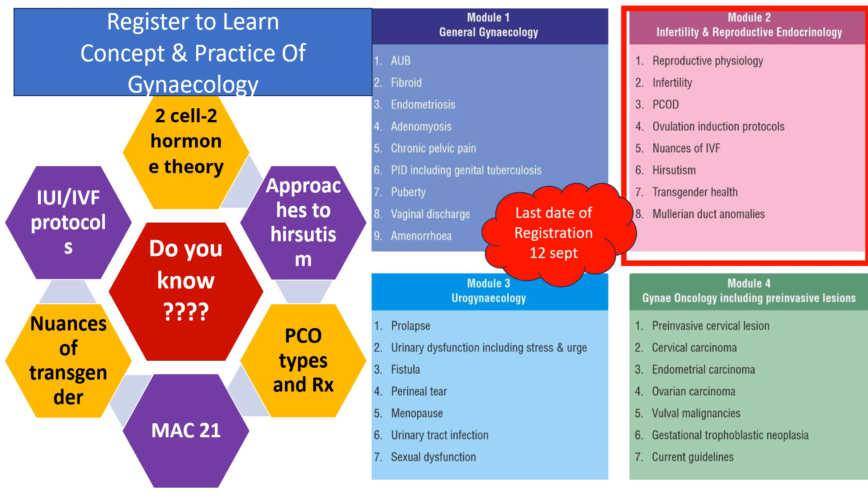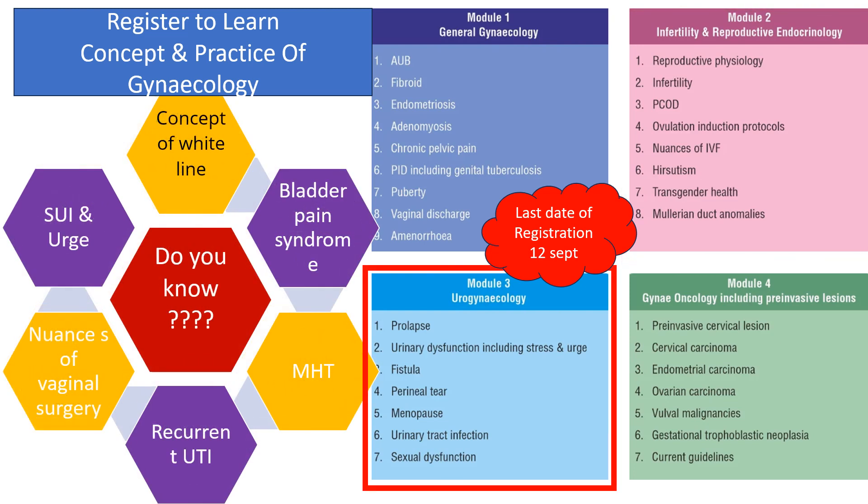Last date of registration is 12th September. The other module will be Urogynecology, where all the post-graduates find it most challenging. Do you know what is the concept of white line, what is bladder pain syndrome, how to manage, how to diagnose, menopausal hormone therapy, management of recurrent UTI, what are the newer guidelines, nuances of vaginal surgery, and how to diagnose SUI and urge incontinence? Join me in Module 3 for Urogynecology.